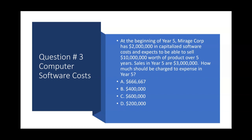Topic number three: computer software costs. Prior to having a product that is technologically feasible, all costs going into a new software product are expensed as R&D. Most R&D goes nowhere and never becomes anything usable. But if you do reach technological feasibility with computer software, you then begin to capitalize costs. Once capitalized, those costs will be amortized and charged to expense over the periods benefited.